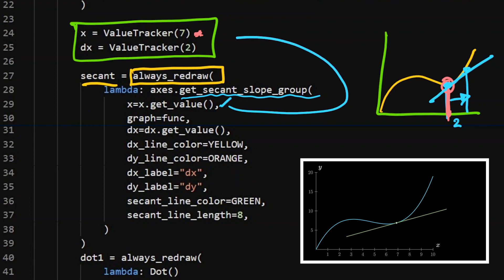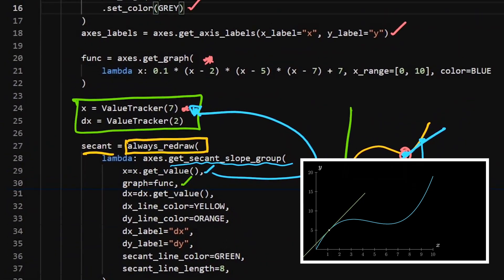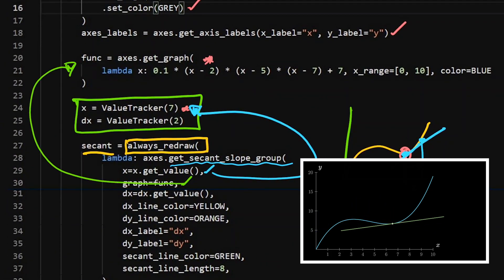X, that's going to be that x value from up there. The graph is going to be the function. That's this guy that I've created up there. Then I'm going to have my dx, that's going to be dx.get_value. So you can see within this secant, there's two value trackers that I'm going to be managing.